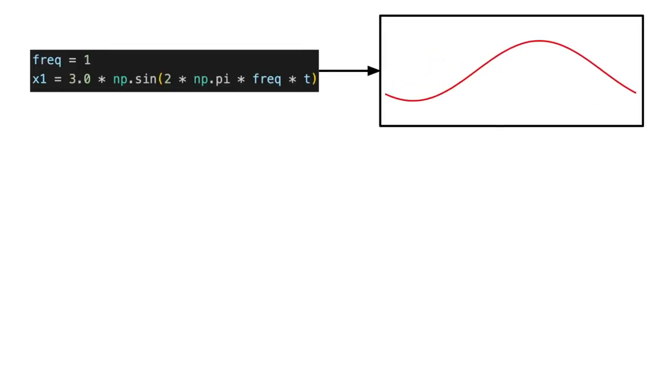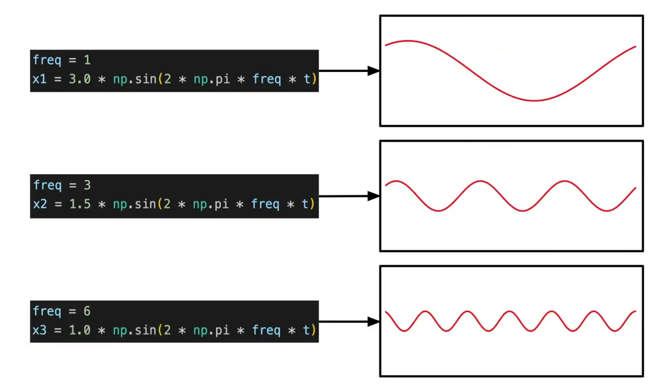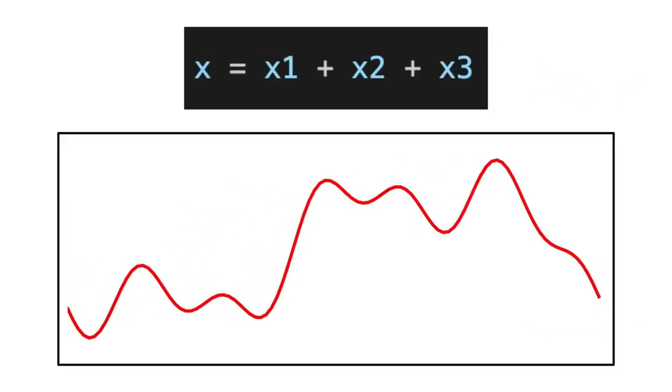The first signal will have a frequency of 1 and an amplitude of 3. The second signal will have a frequency of 3 and an amplitude of 1.5. And the final signal will have a frequency of 6 and an amplitude of 1. And by adding them, we obtain the following signal.